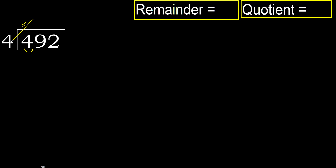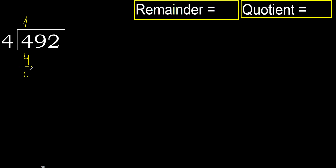4 multiplied by 2 is 8 — 8 is greater. Multiply by 1 is 4, is not greater. Subtract, next.